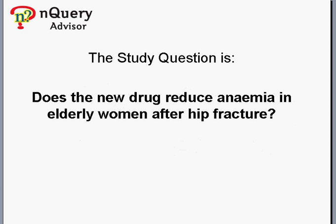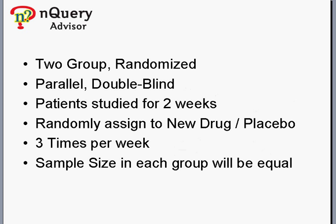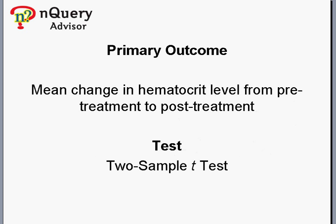The study question is: does the new drug reduce anemia in elderly women after hip fracture? A two-group, randomised, parallel, double-blind study is planned. Patients will be studied for two weeks. Each patient will be randomly assigned to receive either the new drug or a placebo three times per week. The sample sizes in the two groups will be equal. The primary outcome measure will be the mean change in hematocrit level from pre-treatment to post-treatment. These changes will be compared between the two groups using a two-sample t-test.